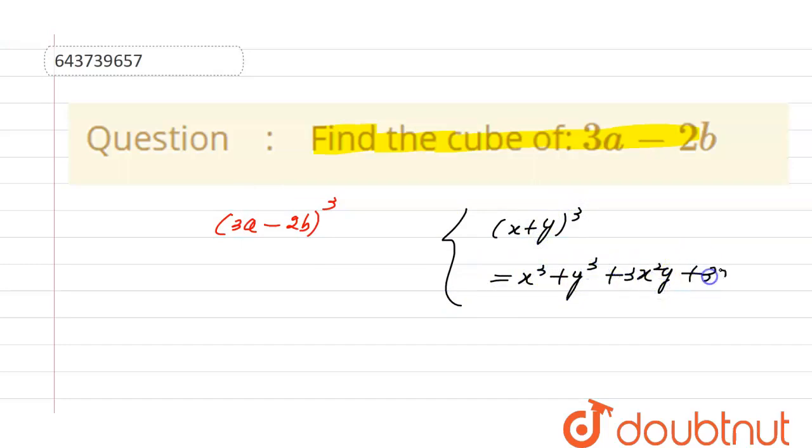So here, the value of x is 3a and the value of y is -2b. So (3a)³ + (-2b)³ + 3(3a)²(-2b) + 3(3a)(-2b)². So now we can solve it: 3 × 3 × 3, 3 raised to the power 3 will be 27a³.